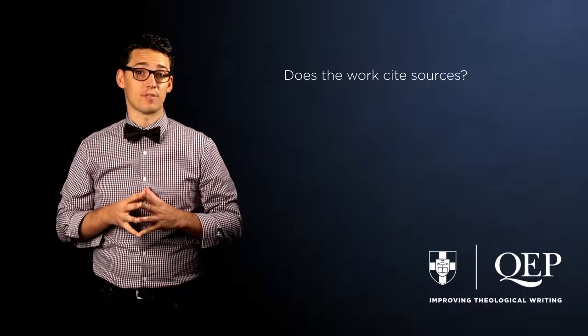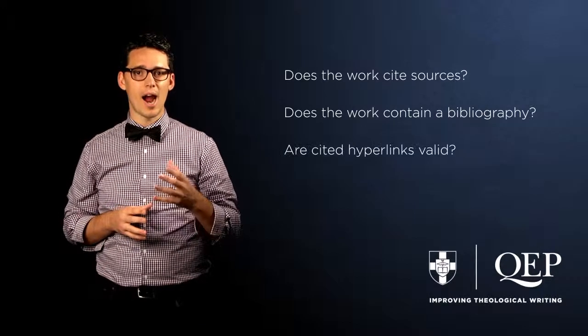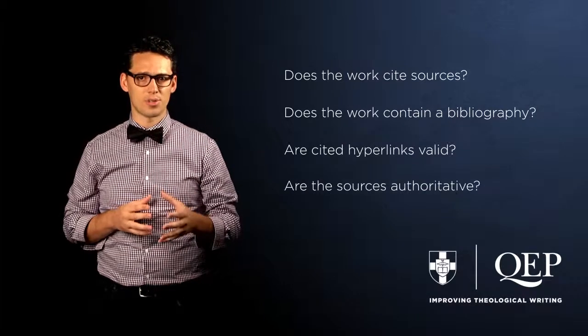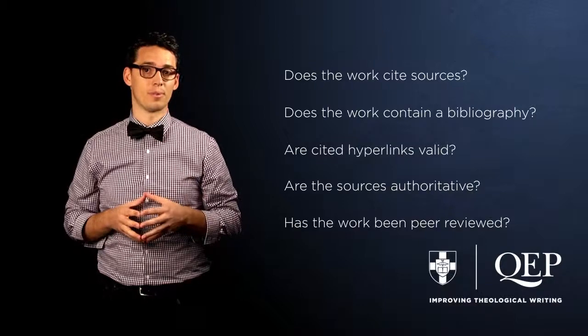Accuracy is one of the most important criteria in selecting resources for inclusion in our research. We want to ensure that the information we use is credible and reliable. You can ask yourself a few basic questions: Does the work cite the sources for its information? Does the work contain a bibliography? Are the hyperlinks for cited internet sources valid? Are the sources that the author cites authoritative? And has the work been peer reviewed?